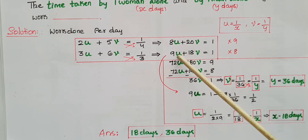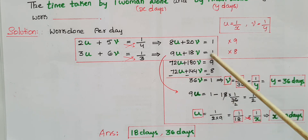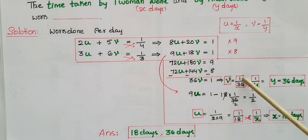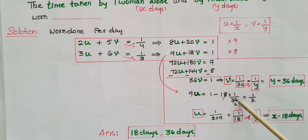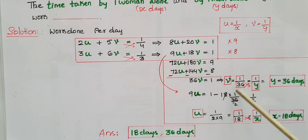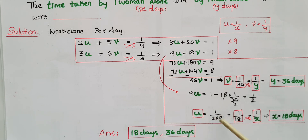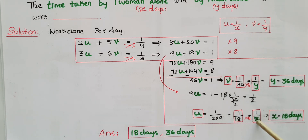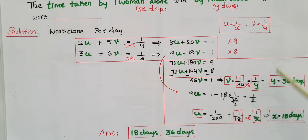Substituting v equals one-by-36 into the equation 9u plus 18v equals one: 9u equals one minus 18 times one-by-36, which is one minus one-half, giving one-half. So 9u equals one-half, meaning u equals one-by-18. Since u equals one-by-x, we get x equals 18 days.